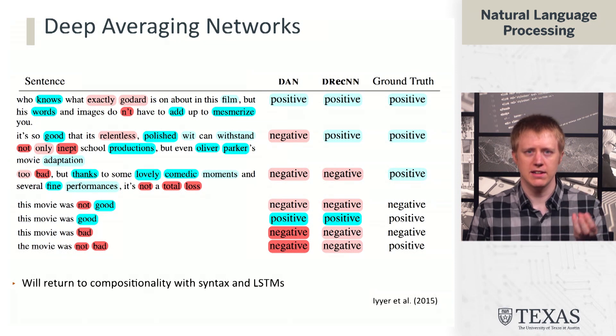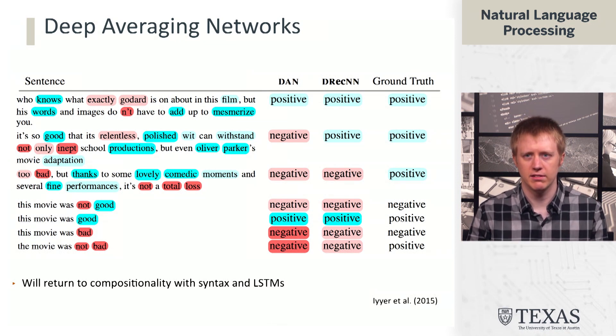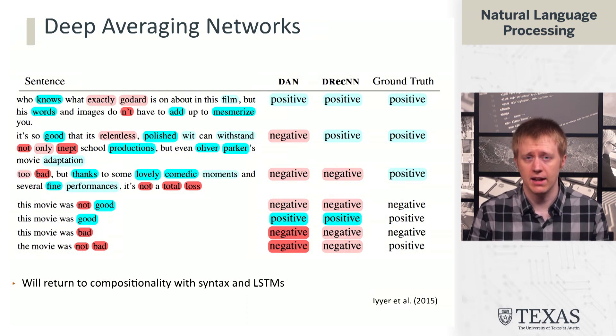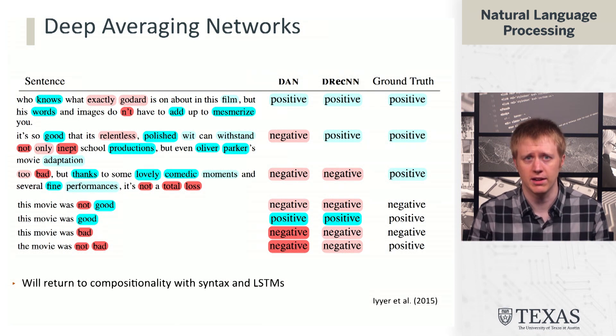We'll come back to the ideas of compositionality once we get to syntax and start talking about tree structures, and also when we talk about recurrent neural networks and long short-term memory models, or LSTMs. But for now, this is at least one way of taking the word embeddings we have so far and making predictions, and it works surprisingly well for this task. And that's the end of this segment.